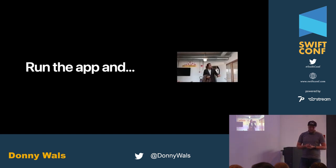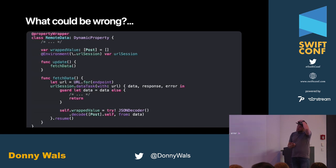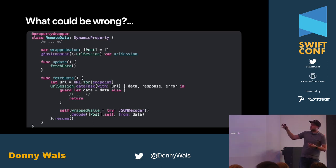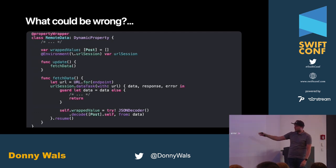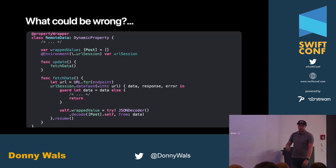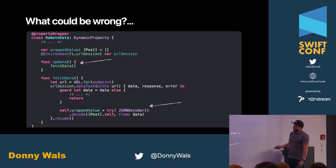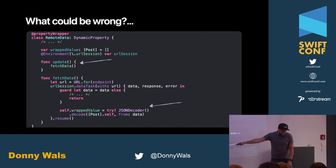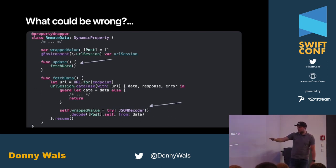You run the app — epic fail, nothing happens. All the code for nothing. Looking at the code: struct RemoteData, DynamicProperty, wrappedValue, URLSession, update calls fetchData — that works. We set the wrappedValue and resume the data task. If I put a breakpoint on fetchData, I can see it's being called. So what's wrong? Simply updating the wrappedValue is not enough to tell SwiftUI the data was fetched.